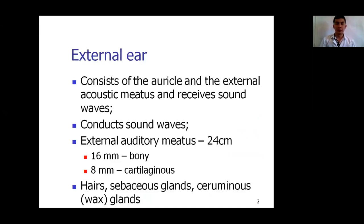The external ear is represented by the auricle, also known as the pinna, and the external acoustic meatus. These structures receive sound waves, conduct them, and transmit them into the tympanic membrane. The external auditory meatus is a C-shaped tube with a length of 24 mm — 16 mm is the bony portion and 8 mm is the cartilage portion, made up of elastic cartilage. The skin of the external auditory meatus is lined by hairs, sebaceous glands, and ceruminous glands, also known as wax glands, which produce cerumen or wax.